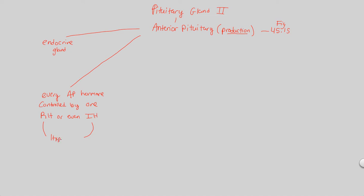The hypothalamus produces and secretes both these releasing and inhibiting hormones. When it secretes a releasing hormone or inhibiting hormone, that travels via the portal vein to the anterior pituitary, telling it either to make something — releasing hormone — or to stop making something — inhibiting hormone. The hypothalamus is the boss, telling the anterior pituitary, its best employee, to either do this or do that.